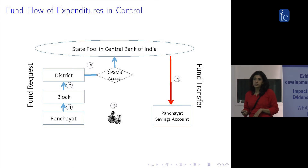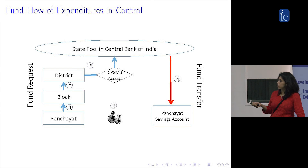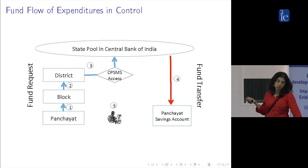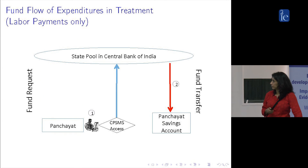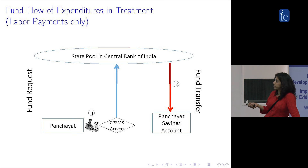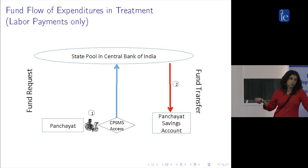It's useful to see this graphically. In the status quo, the panchayat makes a request for funds on the basis of anticipated works. That goes to the block that signs off, then the district that signs off. The district accesses this electronic platform or CPSMS, puts the request into the state pool, and then that goes into the panchayat savings account. Worker details are entered after the work occurs. In contrast, in the treatment, the panchayat waits till the work is done, then enters the data, gets direct access to the CPSMS, which pulls from the state pool and gives the money to the panchayat saving account. You're changing when the entry occurs and the layers you have to go through.